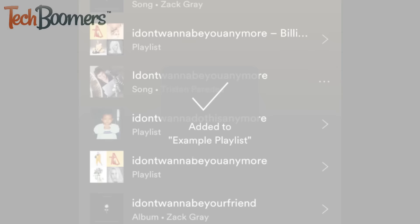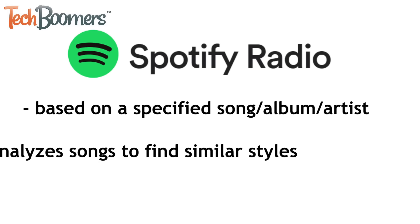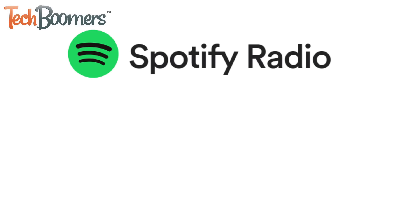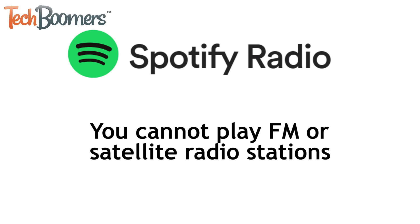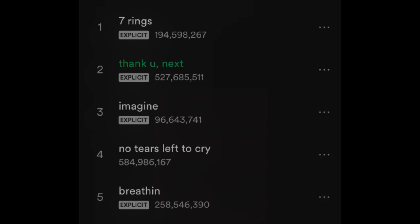Another cool feature of the app is Spotify Radio. This feature picks music for you based on an artist, album, or song you like. Spotify automatically analyzes songs and creates radio stations with music that is similar and likely to be enjoyed by people who enjoy the artist, album, or song the station is based on. Note that Spotify cannot be used to listen to regular FM or satellite radio stations — it's called Spotify Radio because the songs are chosen for you, similar to how traditional radio stations work. You can access radio by tapping the three dots beside a song title, album name, or artist name, then selecting Go to Radio.